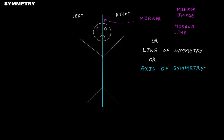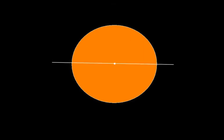You have to remember these terms. Now we have a circle here, and we are going to do the same thing with this circle. From the center, this line is passing, dividing this circle into two equal halves. These two equal halves will be the mirror image of each other, and therefore this circle will be called a symmetrical figure. This is the mirror line, or line of symmetry, or axis of symmetry.